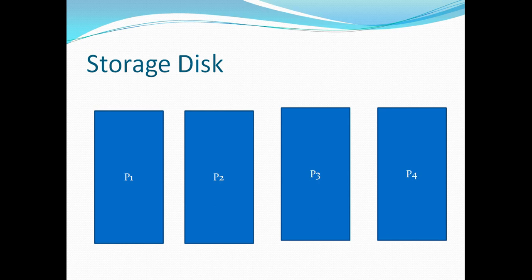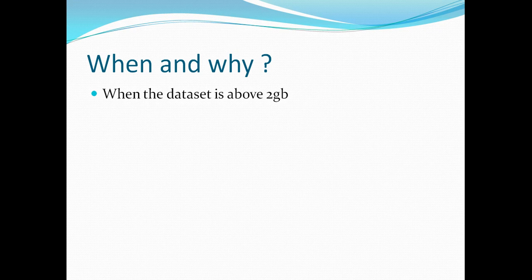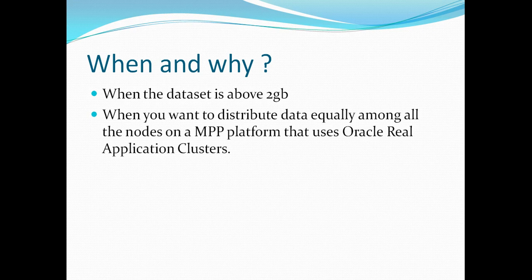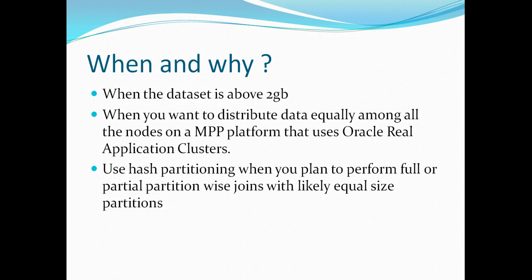Let's recap when and why we should use hash partitioning. First, the dataset should be above 2 GB — only sufficiently large tables should be partitioned. Second, hash partitioning is ideal when you want to distribute data equally among all nodes on a massively parallel processing platform using Oracle Real Application Clusters. The third and main use case is to utilize full or partial partition-wise joins with equally sized partitions, which we will now understand in detail with our transaction demo table.